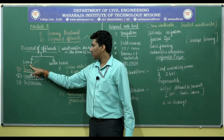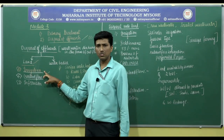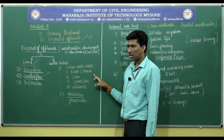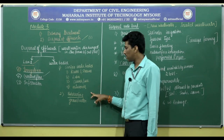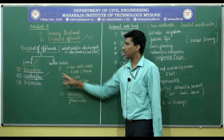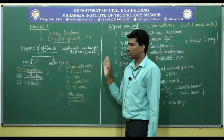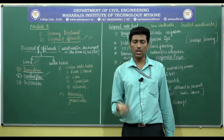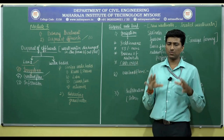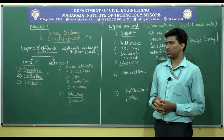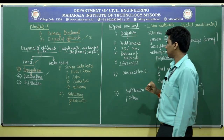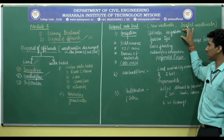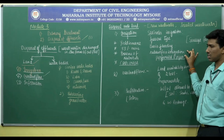Disposal of effluents consists of disposal onto land or onto water bodies. On land, we have irrigation, overland flow, and infiltration. Onto water bodies, we have surface water bodies — rivers and streams, lakes, oceans or seas, and estuaries. In the case of subsurface, we have groundwater. Let me take up the land disposal methods. Irrigation mainly adopts the process of supplying water to crops to yield cereals, pulses, vegetables, or other things after the harvesting period. Different types of irrigation include sprinklers, furrow type, basin flooding, and subsurface irrigation.